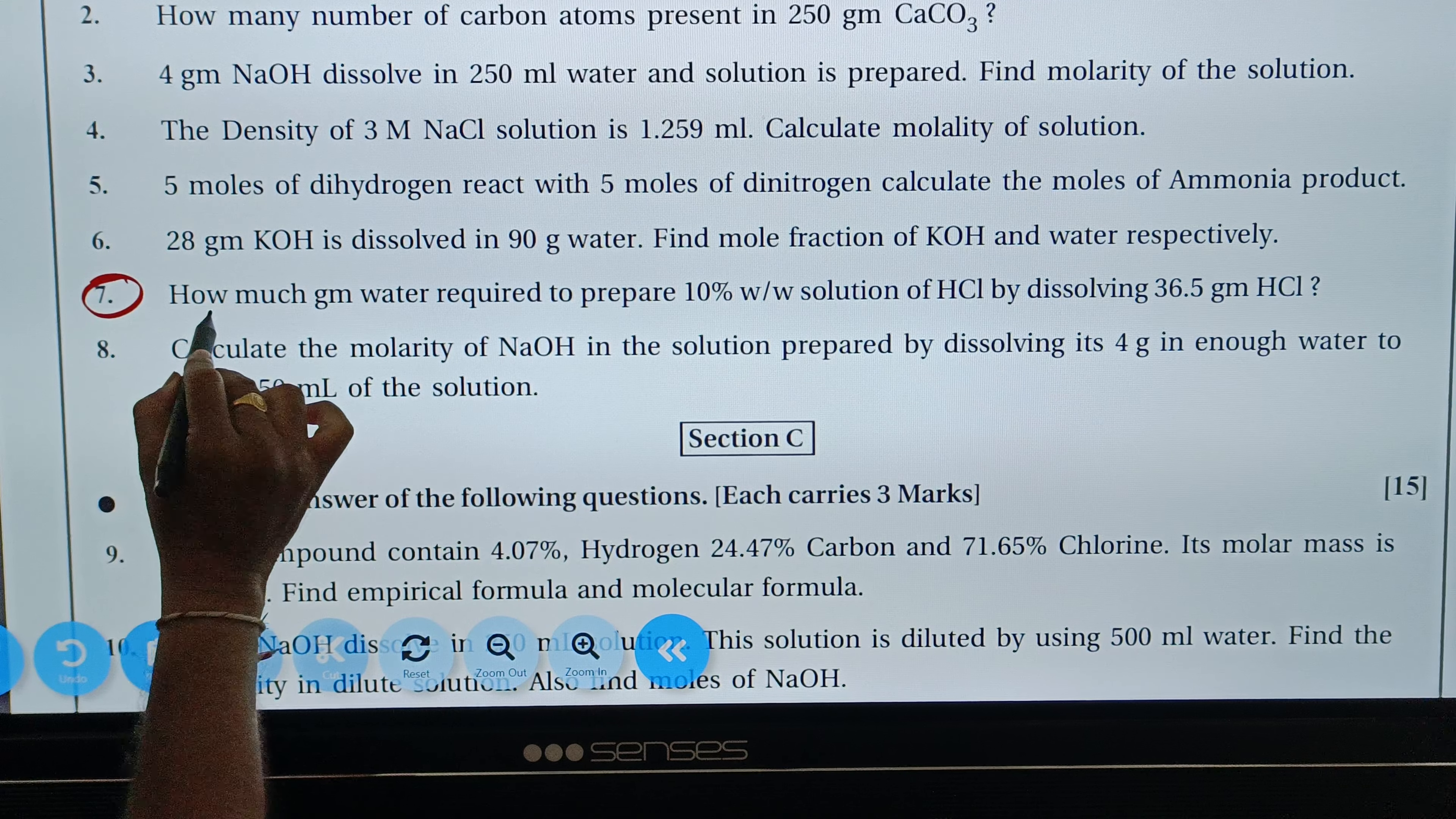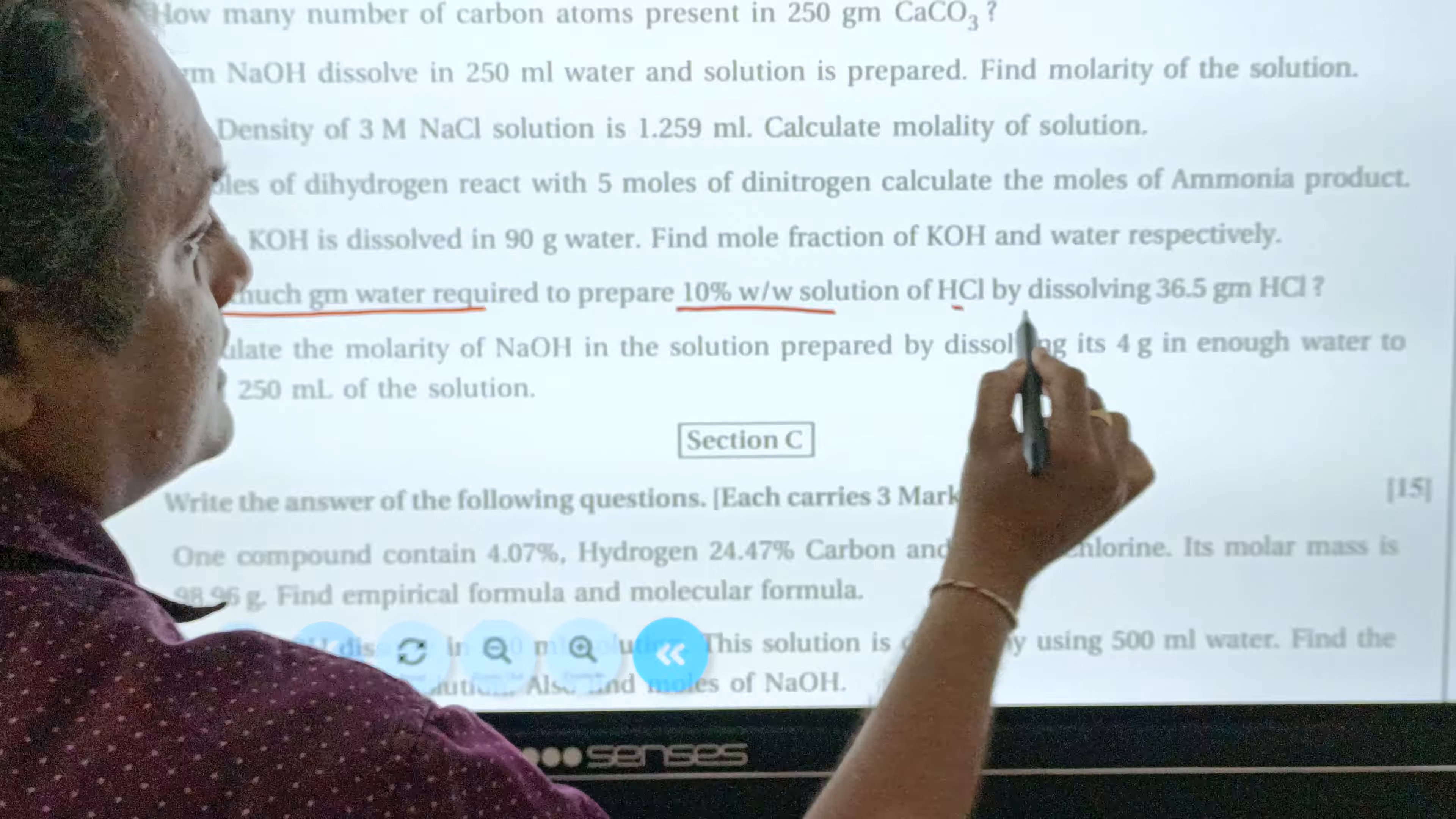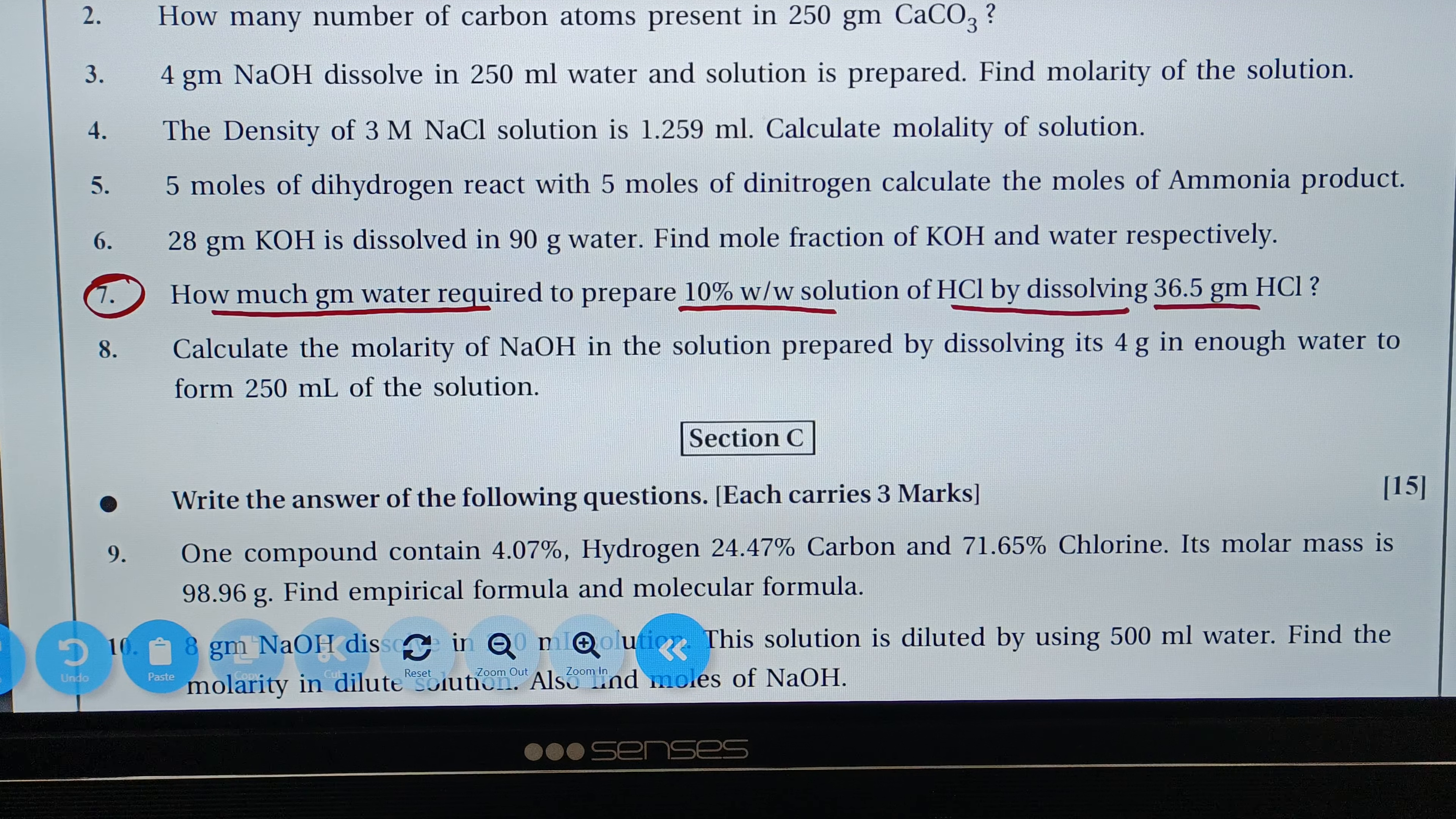Question number 7: How much gram water required to prepare 10% weight by weight solution of HCl by dissolving 36.5 gram HCl?